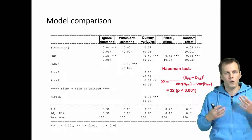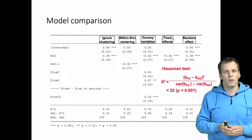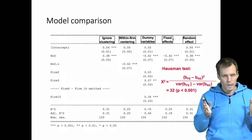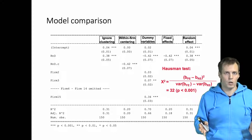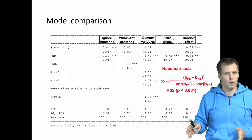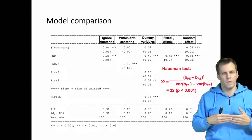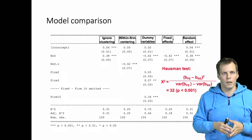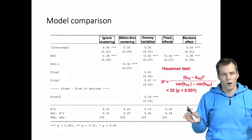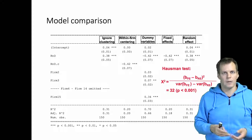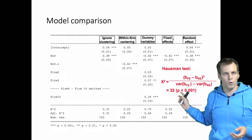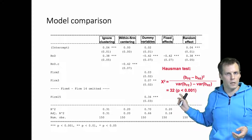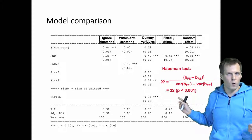In summary, the Hausman test involves estimating the GLS fixed effects model and the GLS random effects model, then comparing the estimates against the difference in standard errors or variances. If they are close, you conclude both are consistent; if they are far apart, you conclude the random effects estimator is inconsistent. In this case, we strongly conclude that the random effects model is not a consistent estimator for these data.